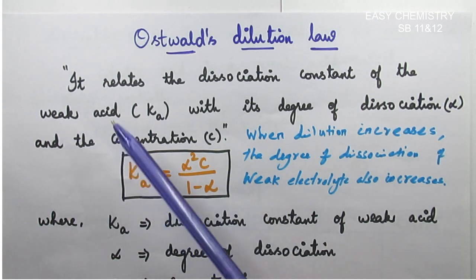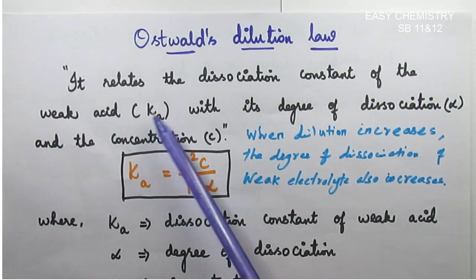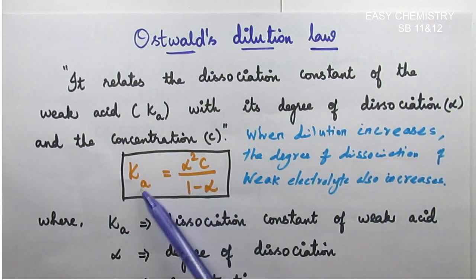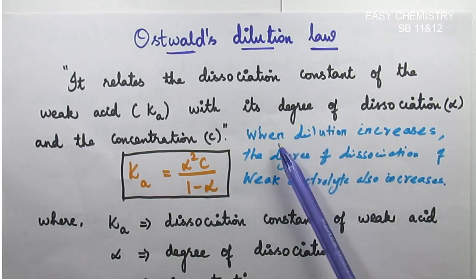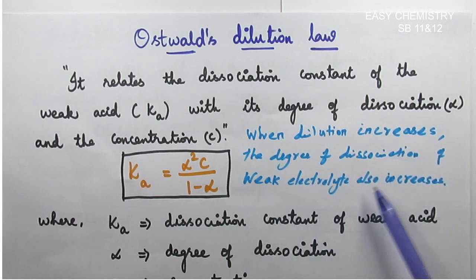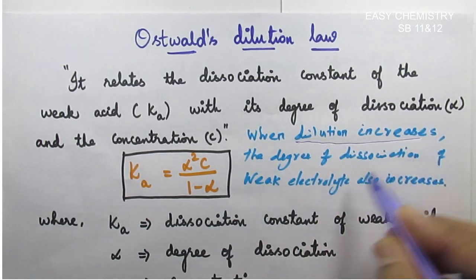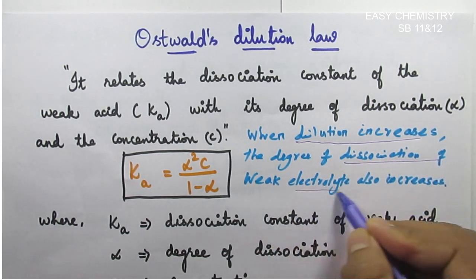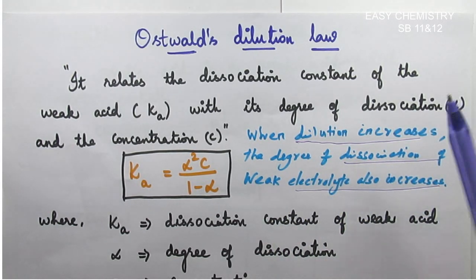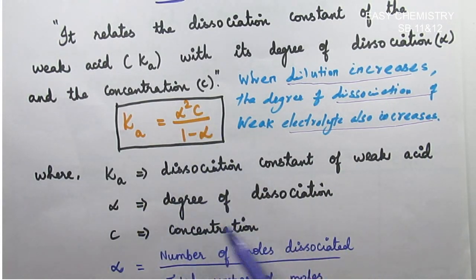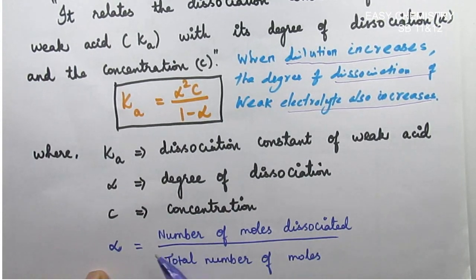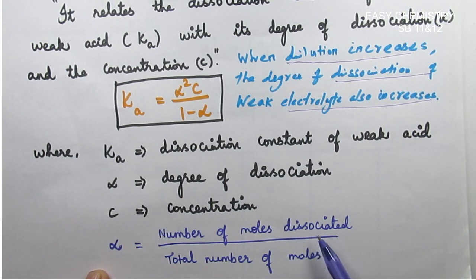As concentration c decreases (i.e., on dilution), the degree of dissociation of a weak electrolyte also increases. This is the expression for the dissociation constant for a weak acid, where alpha is the degree of dissociation and c is the concentration. Alpha is defined as: alpha equals the number of moles dissociated divided by the total number of moles.